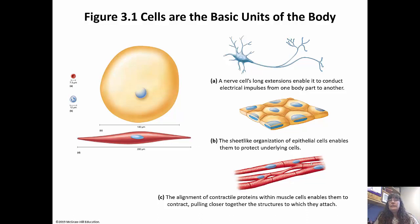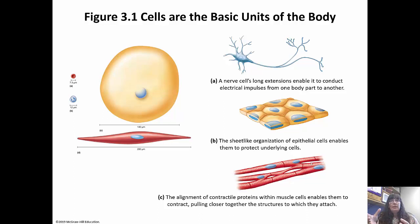We also have muscle cells, which show contractile proteins. Contractile proteins allow the muscles to contract, and they're attached to the bones. They use the bones as a lever system to contract and produce movement. As you can see with all of these different cells, they are highly varied and each has a specific function, but their structure directly relates to their function.